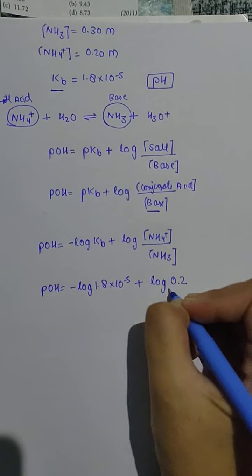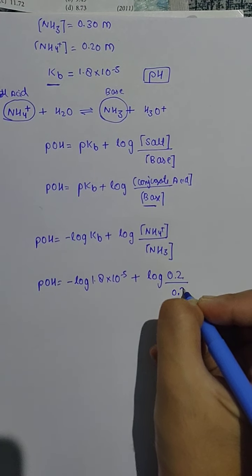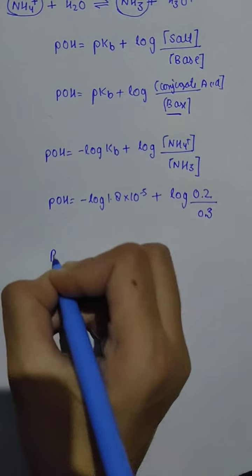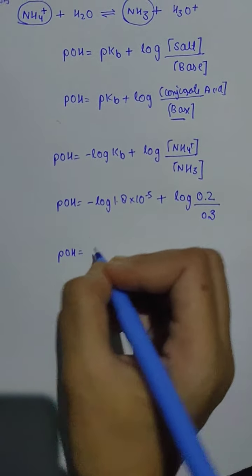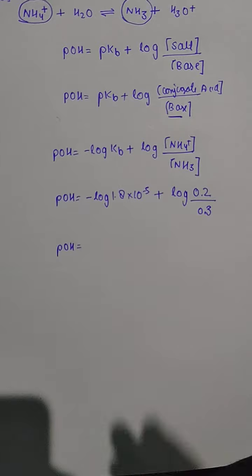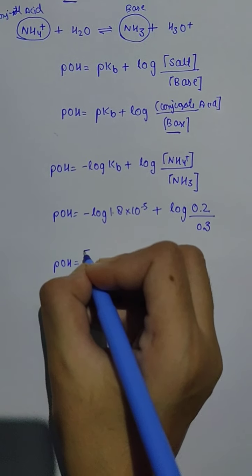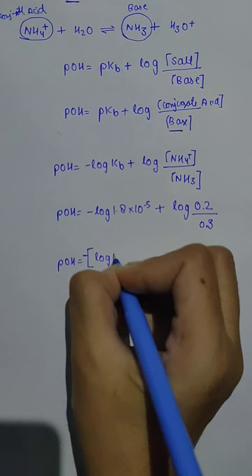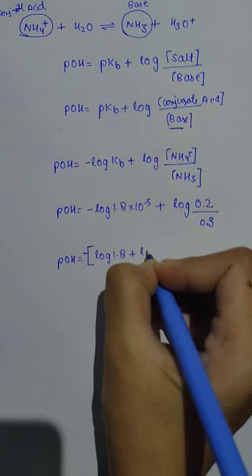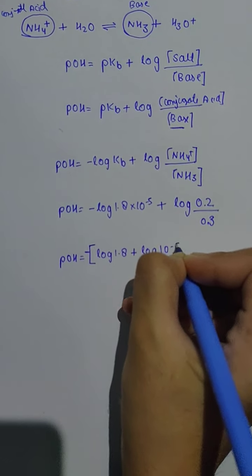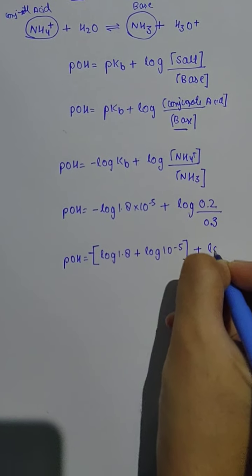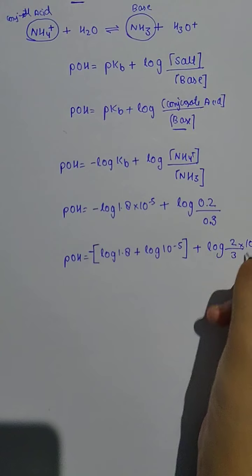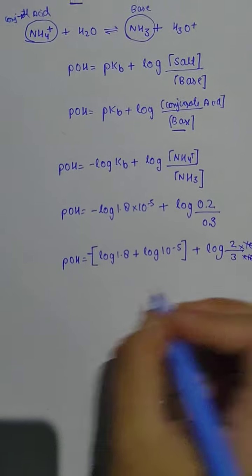pOH equals minus log of Kb, which is 1.8 × 10^-5, plus log of NH4+ which is 0.2 divided by NH3 which is 0.30. We can take the minus sign common and write it as minus[log 1.8 + log 10^-5].